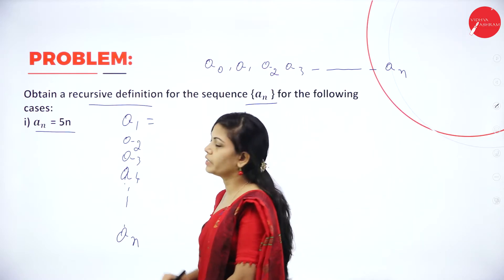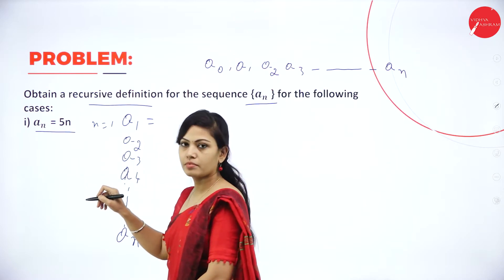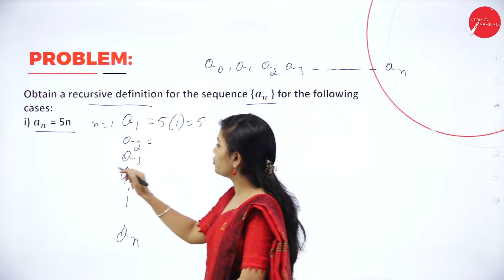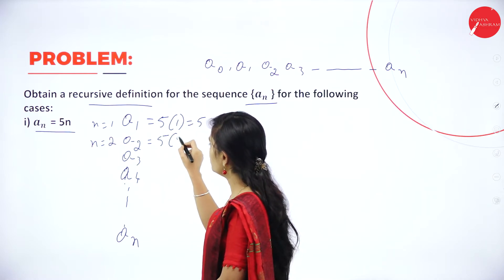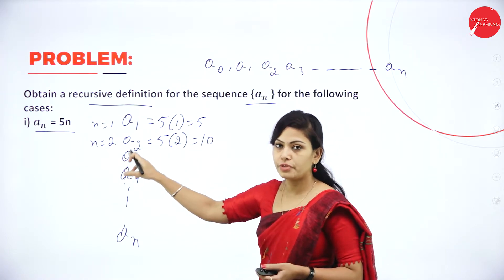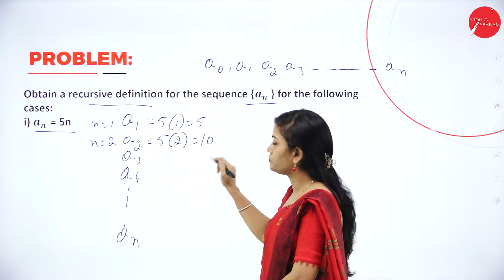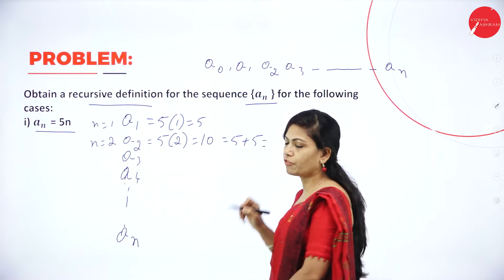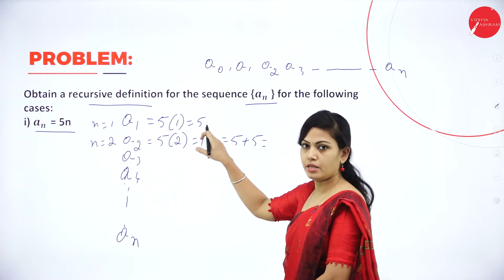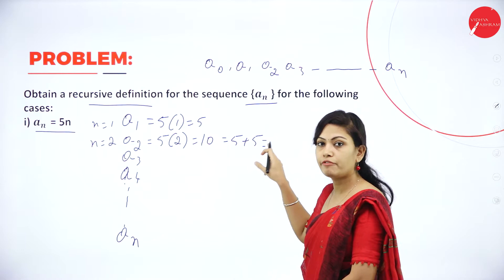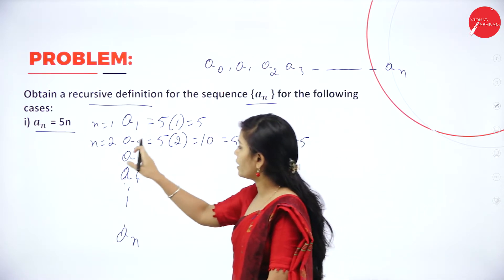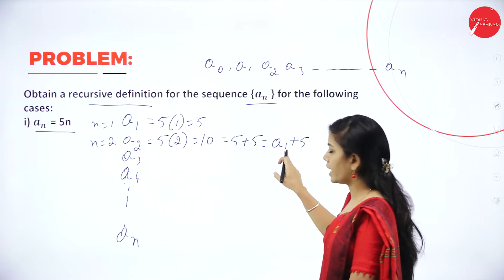First, find a₁. When n equals 1, aₙ = 5 × 1 = 5. Next, find a₂. When n equals 2, 5 × 2 = 10. To represent a₂ using the previous term: 10 = 5 + 5, and since a₁ = 5, we can write a₂ = a₁ + 5. So a₁ equals 5 and a₂ equals a₁ plus 5.